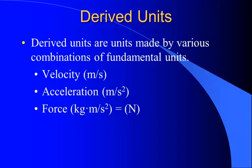Now, derived units — not the fundamental units — are made up of combinations of the fundamental units. For example, velocity is measured in meters per second. Acceleration is measured in meters per second squared — that's how fast velocity is changing. A meter per second squared is just a fancy way of saying a change of one meter per second in velocity every second. Force, which we measure in newtons, is actually made up of a kilogram times a meter per second squared.